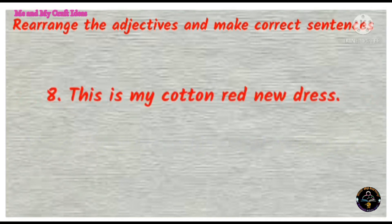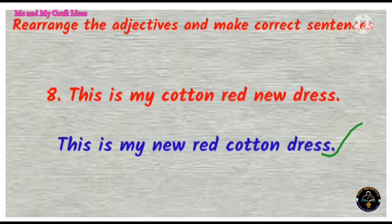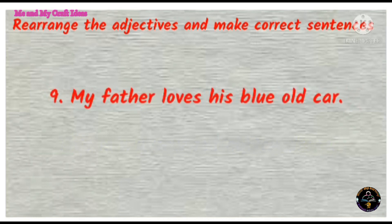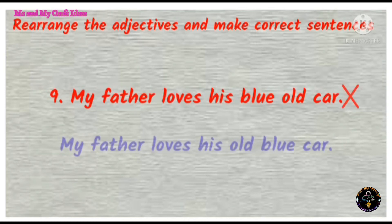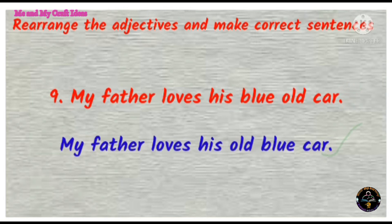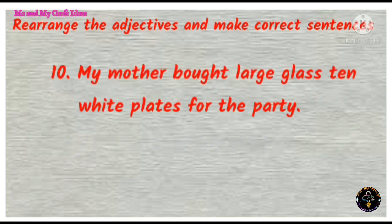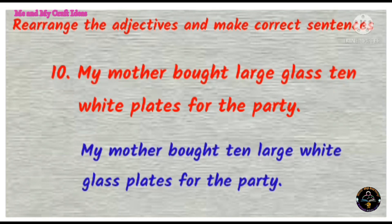This is my cotton red new dress. Correct: this is my new red cotton dress. My father loves his blue old car. Correct: my father loves his old blue car. My mother bought large glass ten white plates for the party. Correct: my mother bought ten large white glass plates for the party.